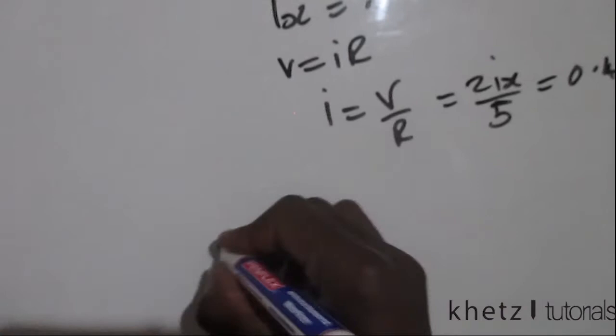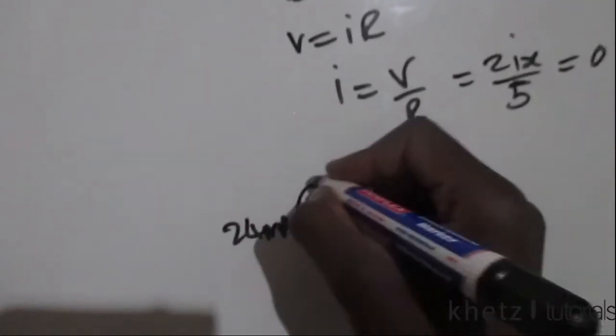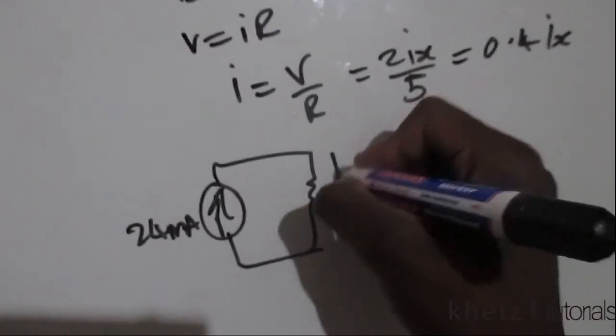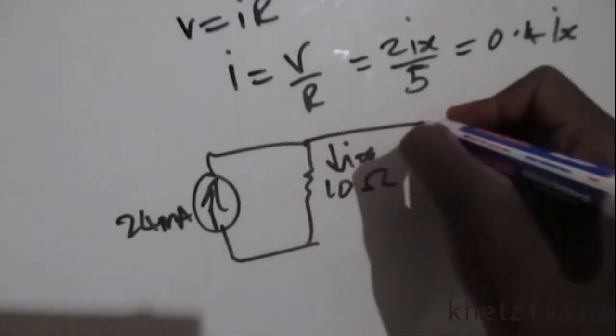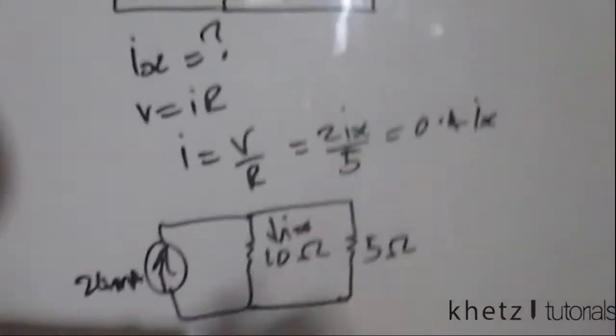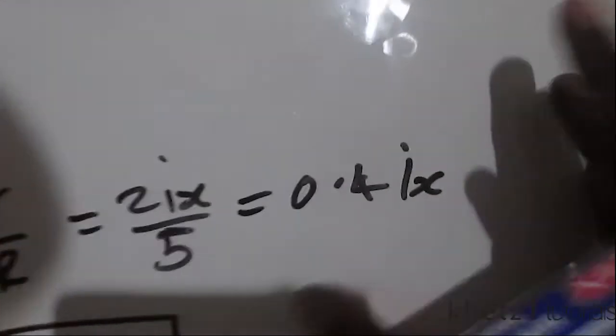Now since we transformed that, let's redraw the circuit. Let's redraw the circuit which we have, and this is what we have at the moment.